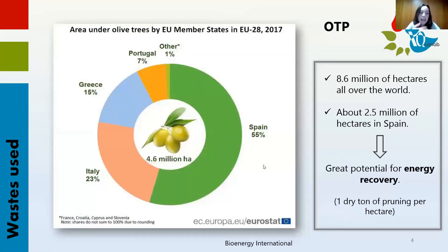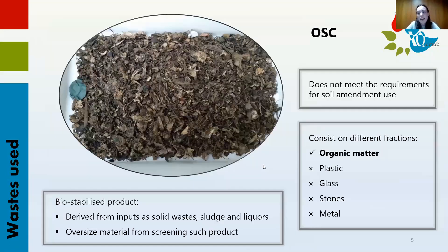It is calculated that all over the world approximately 8.6 million hectares of olive groves are grown, and more than half of this corresponds to European countries. Approximately 2.5 million hectares represents the Spanish growing area, and taking into account that at least one dry ton of olive pruning is generated per hectare, this shows a great potential for energy recovery, which is the main objective here.